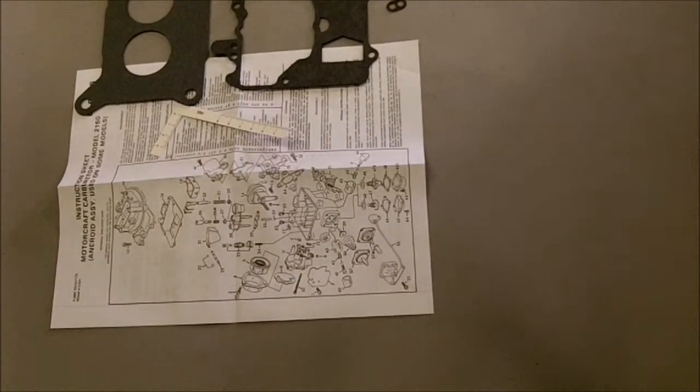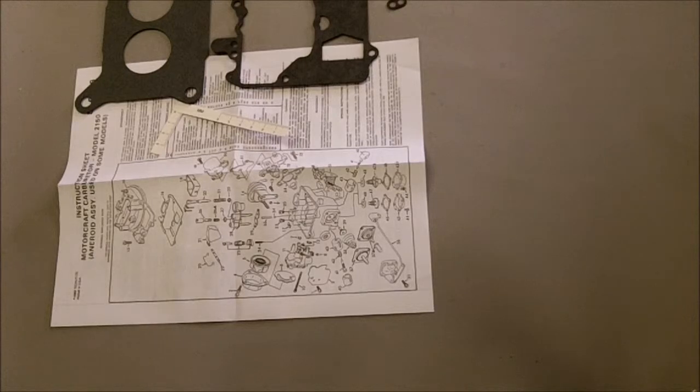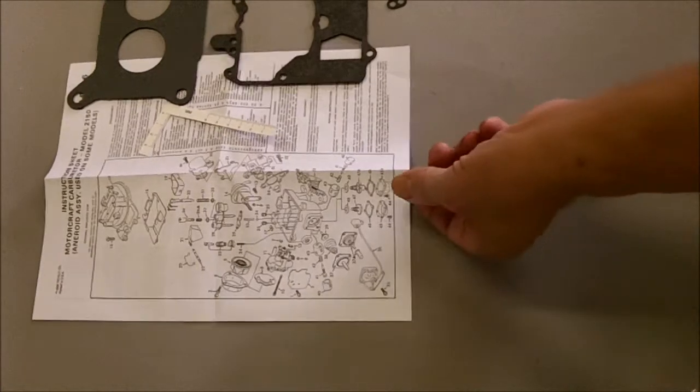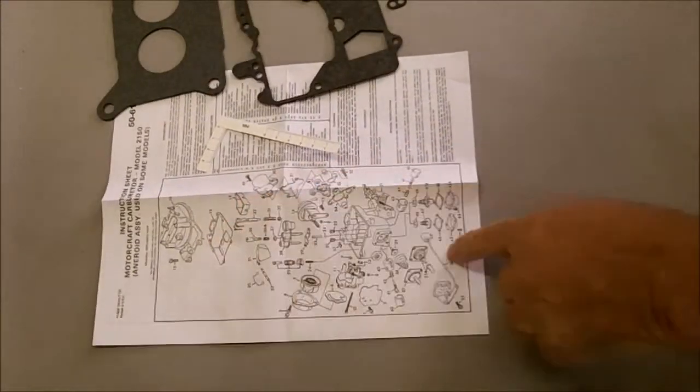I'm Mike Scarborough from Parts here demonstrating the contents of one of our kits, K6147. This is for the Motorcraft 2150, some of the later model ones. As you can see, it comes with the construction sheet with an exploded view.